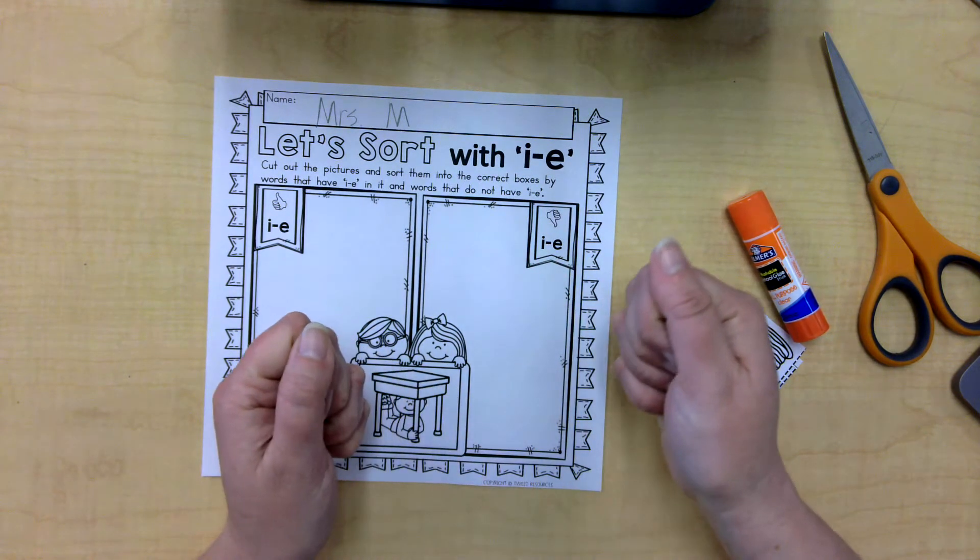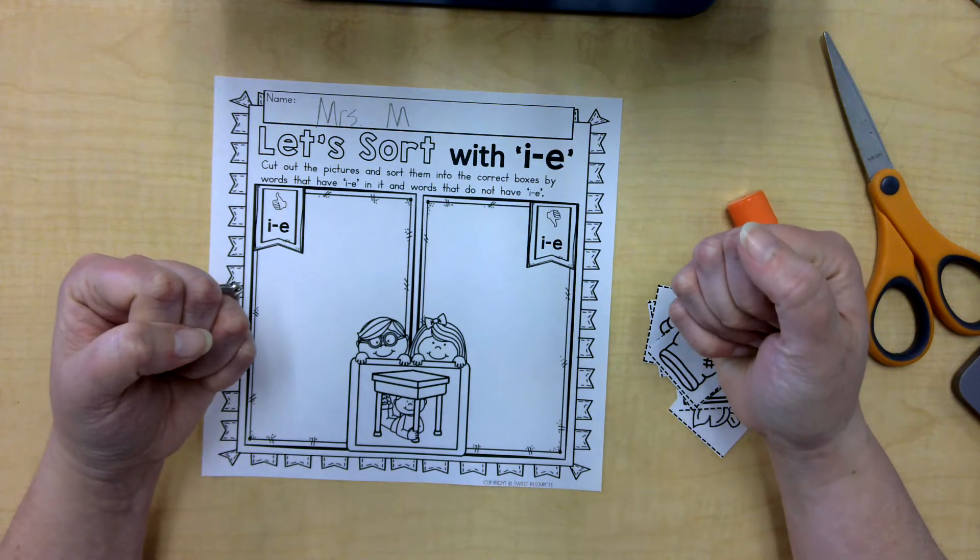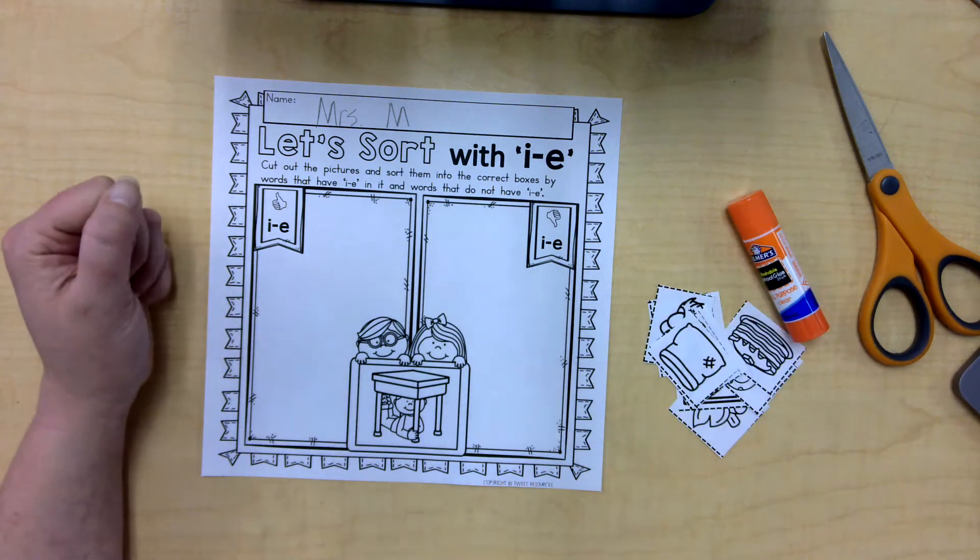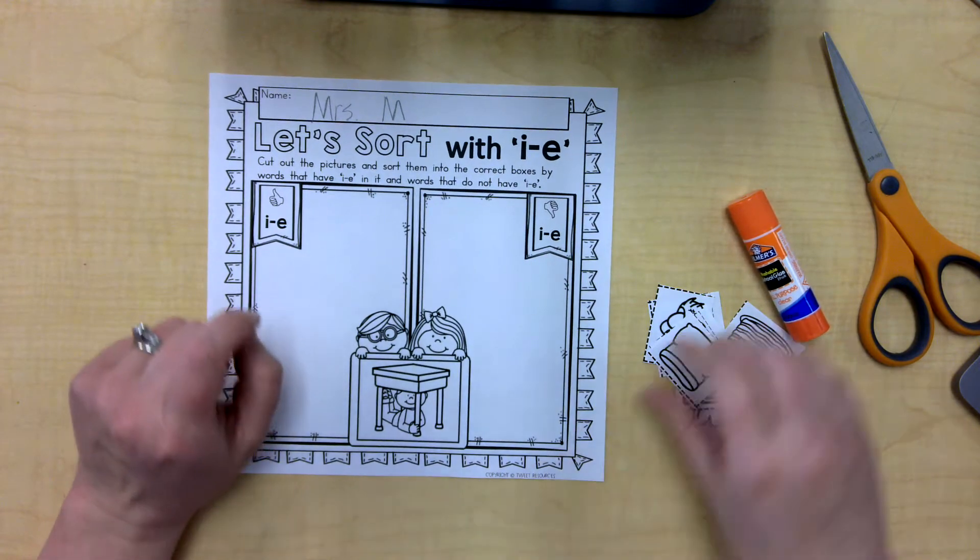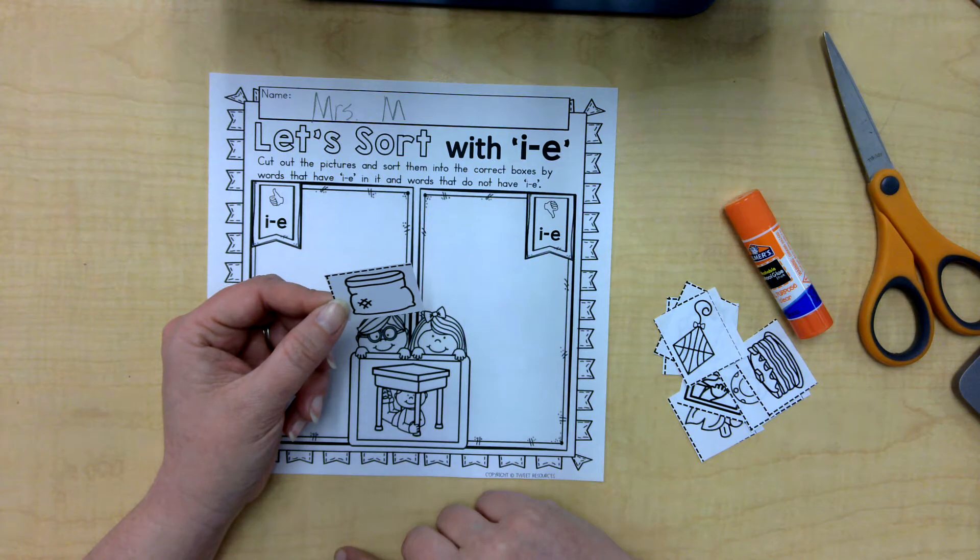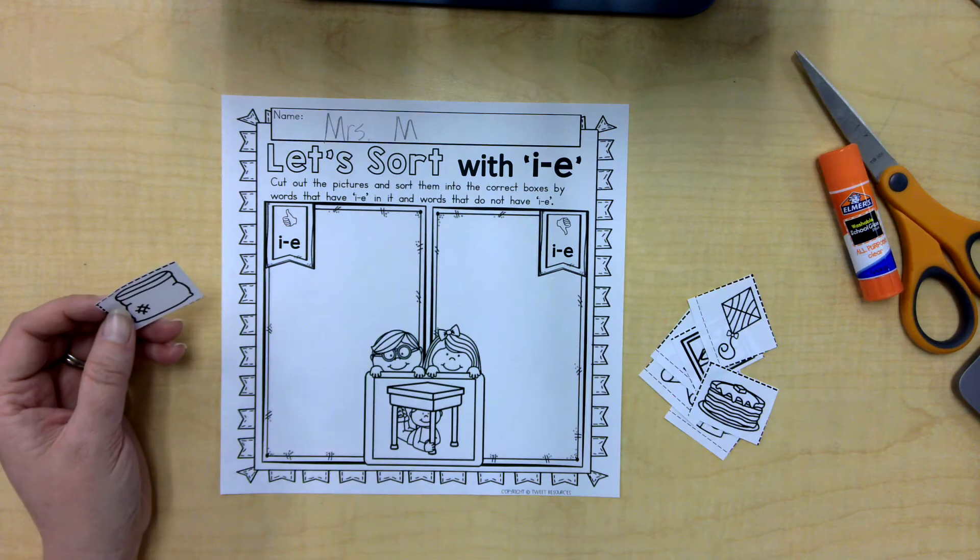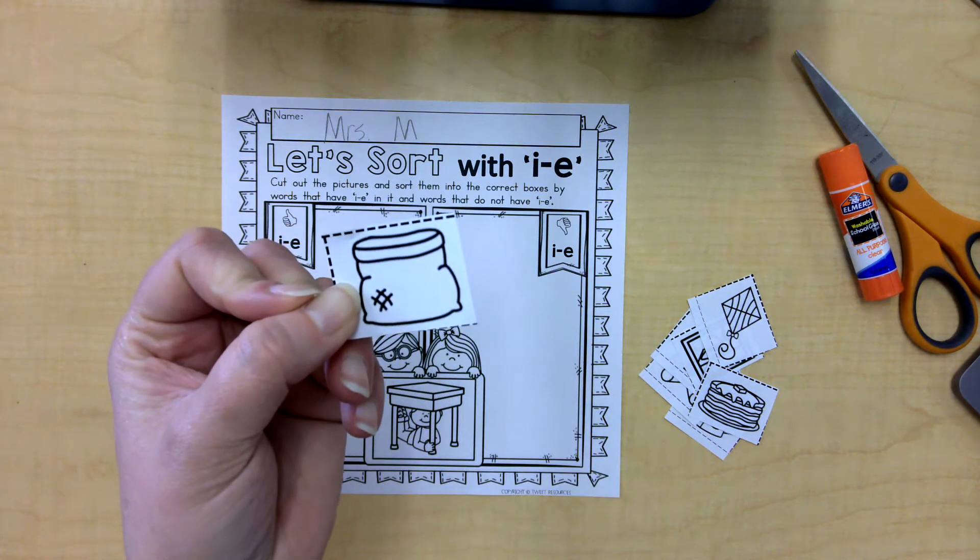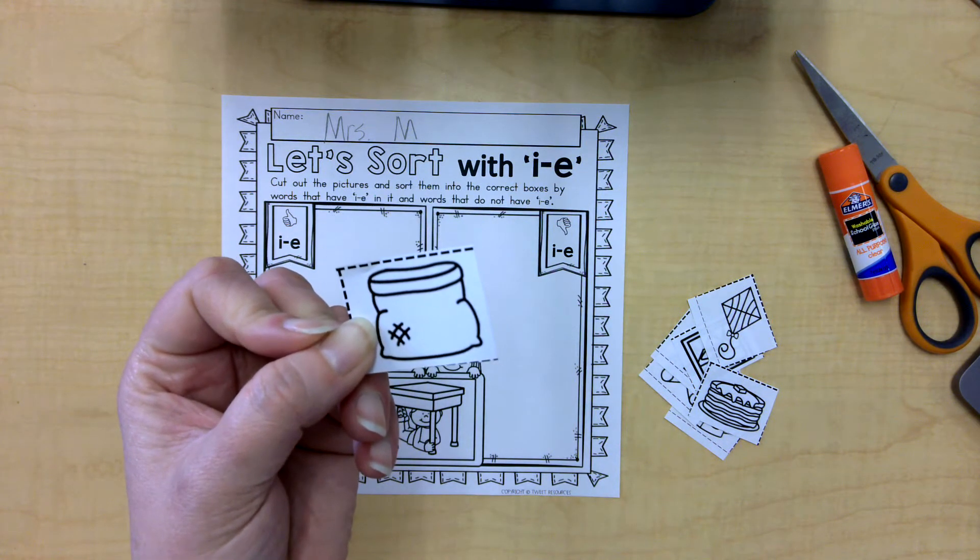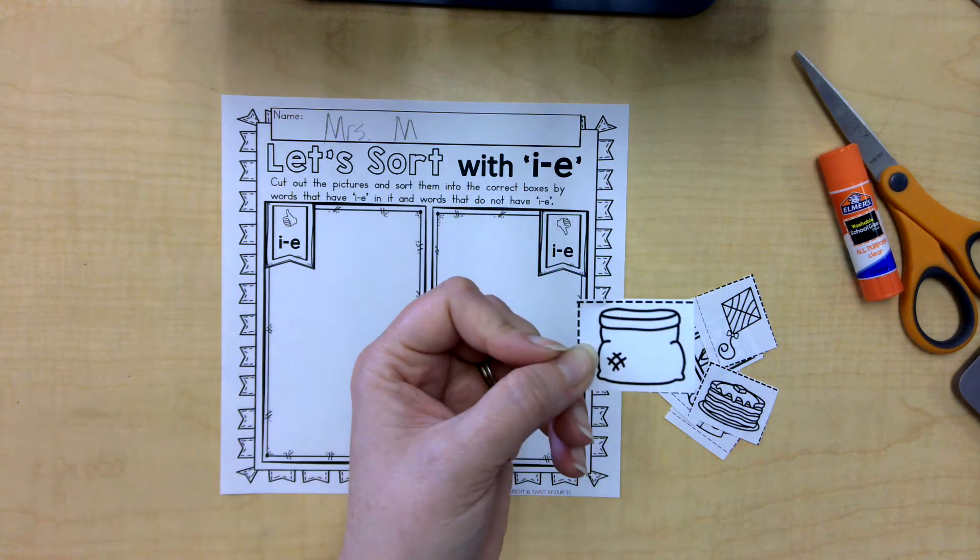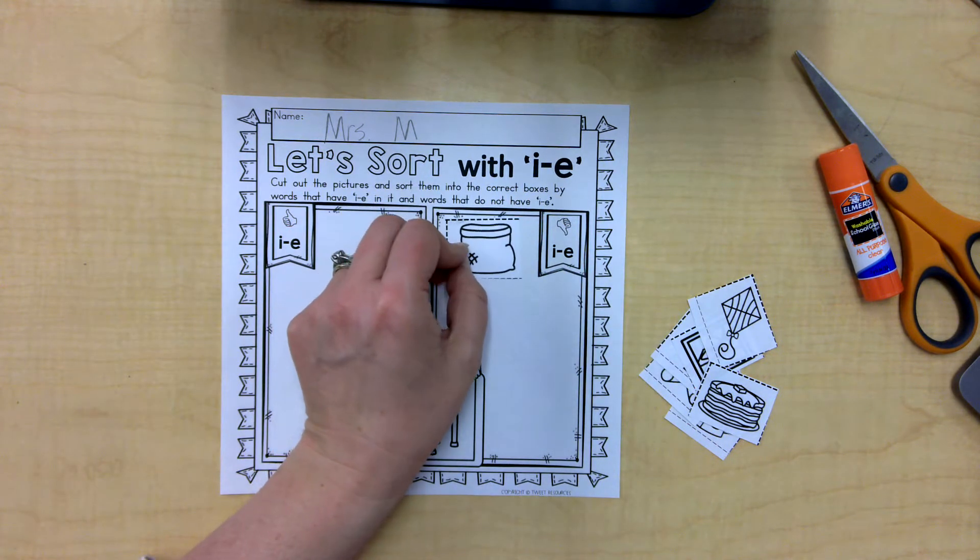Do you hear that? I, superhero I, saying his name. Tight, I. So those are the sounds that I'm listening for. Let's see, what is this? Alright friends, so here I have a sack. Sack. Do you hear an I saying its name? No, no I don't. I'm going to put it over here. Sack.